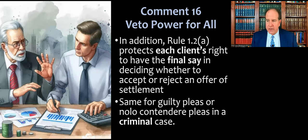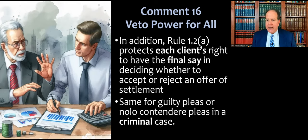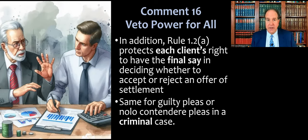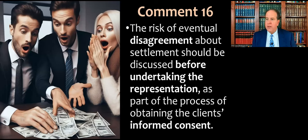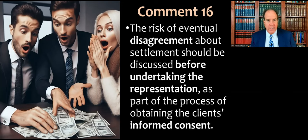We'll also cover Rule 1.2, which concerns the allocation of authority between the lawyer and client. Rule 1.2A protects each client's right to have the final say in deciding whether to accept or reject a settlement offer. In other words, one client can veto the arrangement for their share. If they had different lawyers they could settle independently, but when you represent them together each one has veto power over the settlement for all. Comment 16 to Rule 1.8 says the risk of eventual disagreement about settlement should have been discussed before undertaking the representation, as part of obtaining informed consent under Rule 1.7.